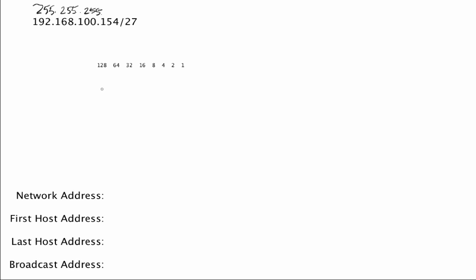Let's draw out what that would look like in binary. We would have 1, 1, 1 — meaning three bits of network in that last octet — and then the remaining bits would all be zeros, five bits of host. Using the bit weightings for each of the eight bits, we convert this to dotted decimal: 128 plus 64 plus 32, because we have those three bits turned on and no others. Adding those gives us 224. So the last octet of our mask is 224.